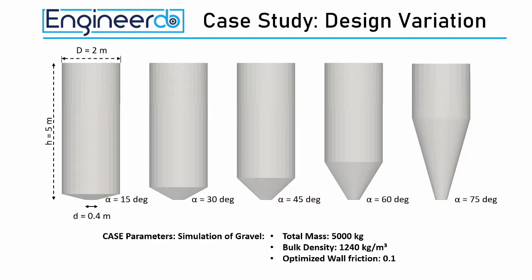For the following simulation we will use parameters representing coarse gravel. In total we will fill the silo with 5 tons of material. The wall friction between the silo wall and the gravel will be 0.1. This is quite a low value, but it can be understood as an already optimized selection of wall liner materials to improve the flowability.